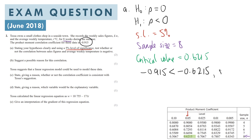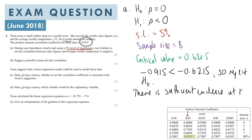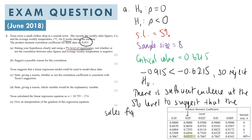We can clearly see that minus 0.915 is more extreme — closer to minus 1 — than minus 0.6215. So we can reject H0 and conclude that there is sufficient evidence at the 5% level to suggest that the sales figures and average weekly temperature are negatively correlated.